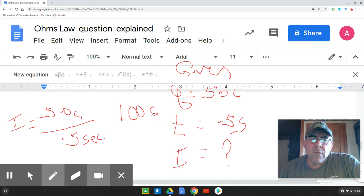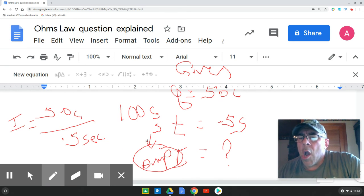100 what? 100 coulombs per second. What's another name for a coulomb per second? Another name for a coulomb per second is an amp. So the correct answer there would be 100 amperes or amps.